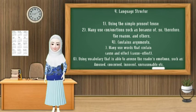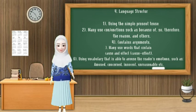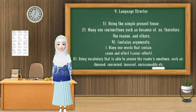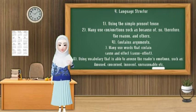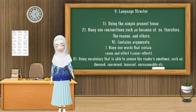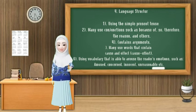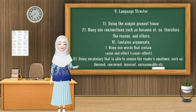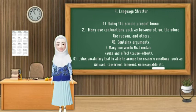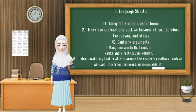Struktur bahasa dalam penggunaan exposition text. Yang pertama itu menggunakan simple present tense. Yang kedua, menggunakan conjunction seperti 'because of', 'so', 'therefore', 'the reason', dan lain sebagainya. Yang selanjutnya itu mengandung argumen. Yang selanjutnya itu menggunakan beberapa kata yang mengandung cause and effect. Yang terakhir yaitu menggunakan kosa kata yang bisa membangkitkan emosi pembaca, seperti 'amused', 'concerned', 'innocent', 'unreasonable', dan lain sebagainya.